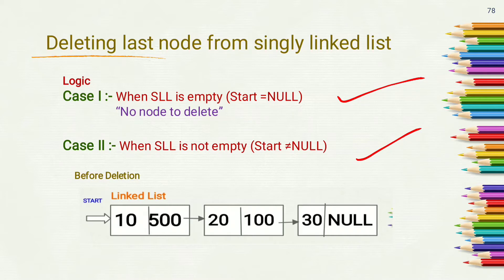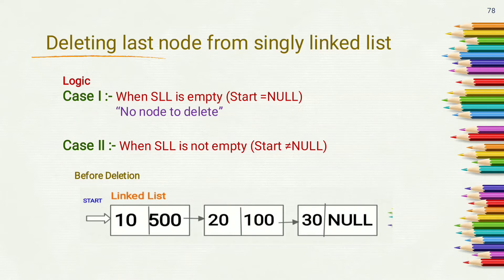When the singly linked list is not empty, that means start is not equal to null. We have given a singly linked list containing 3 nodes having values 10, 20, and 30. Start is pointing to the first node and we want to delete the last node. So after deletion we will get only 2 nodes having values 10 and 20.